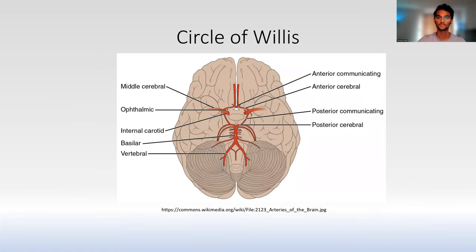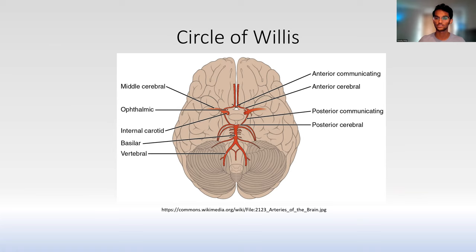We'll start with the circle of Willis and some blood vessel anatomy. Each region of the brain is perfused by a blood vessel. For the cortex, we'll focus on the main three: the anterior cerebral, the middle cerebral, and the posterior cerebral. The anterior cerebral goes through the middle portions of the front part of the brain, the middle cerebral goes to everything in the middle, and the posterior cerebral heads towards the back. Towards the end of the video, we'll also focus on the brainstem, which is supplied by a combination of the vertebral, basilar, and posterior cerebral branches.